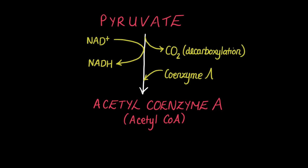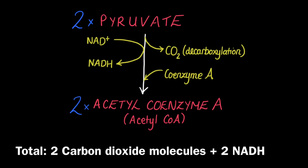It is important to remember that during glycolysis we produce two pyruvates, and therefore for every molecule of glucose we go through the link reaction twice. This produces two molecules of acetyl coenzyme A, two CO₂s, and two NADH.